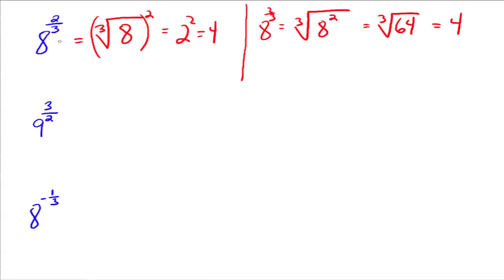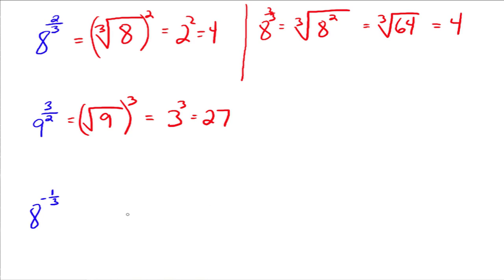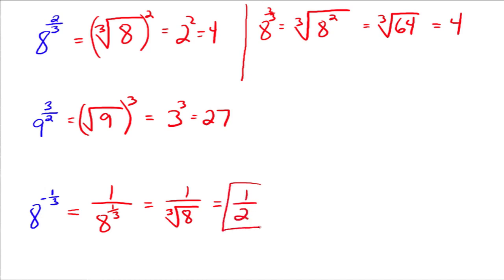I typically do it the first way because it keeps the number smaller. So here we'd have the square root of 9 cubed — the square root of 9 is 3, and 3 cubed is 27. So 9 to the 3 halves is just a fancy way of writing 27. For 8 to the negative 1 third, first make your exponent positive: write it as 1 over 8 to the 1 third, which is 1 over the cube root of 8, which is 1 half.